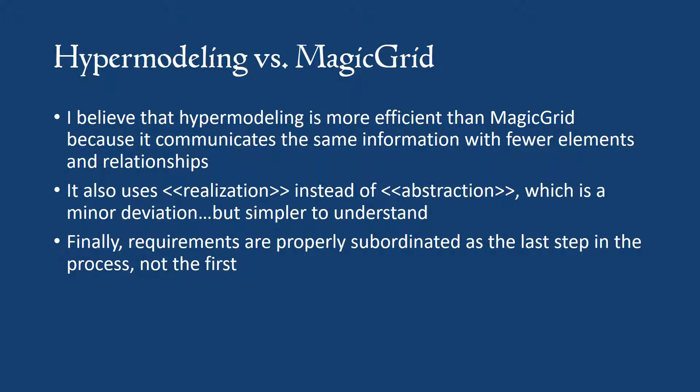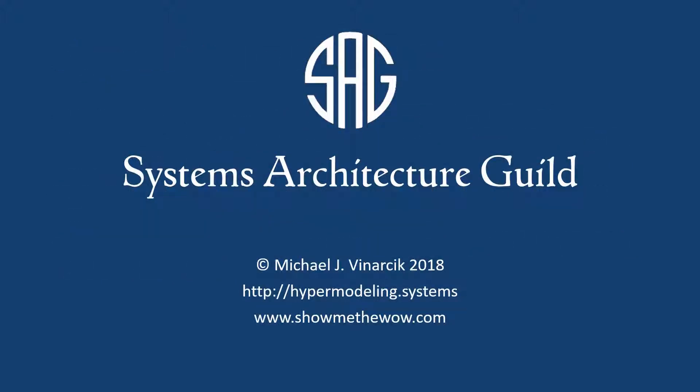I do think we're a little more efficient because we have the same information captured with fewer elements. We use realizations instead of abstractions, which is a fairly minor deviation for jumping between the architecture levels, but I think it's easier and simpler for people to understand — to say that I realize that system as opposed to I abstract it. And again, we subordinate requirements to the last step in the process, not the first.